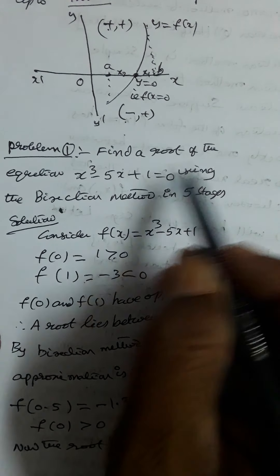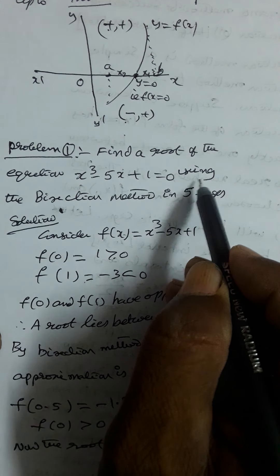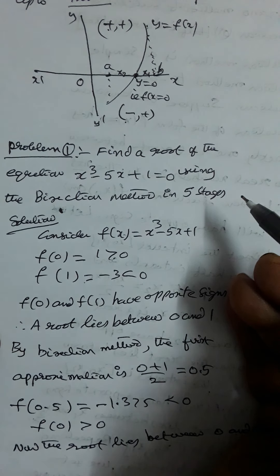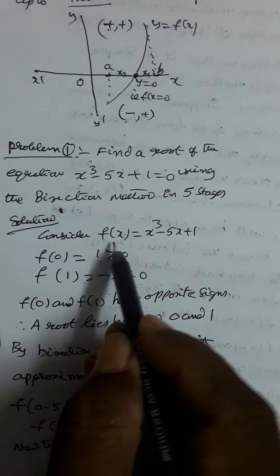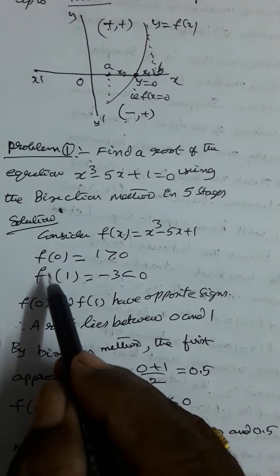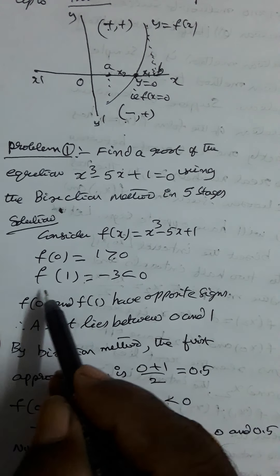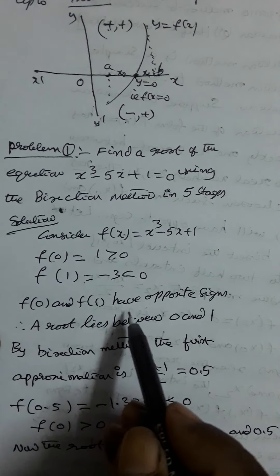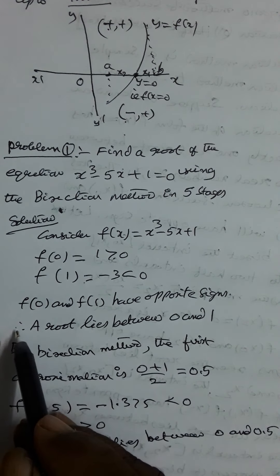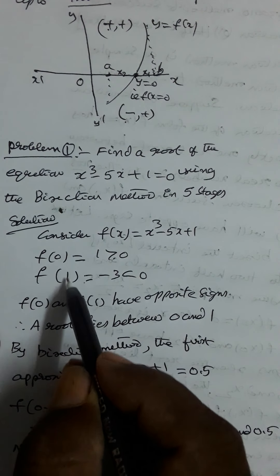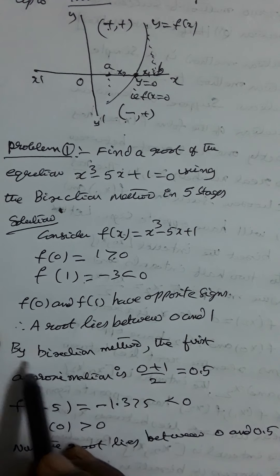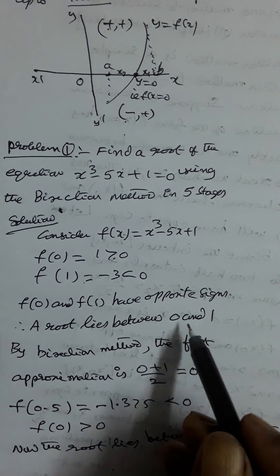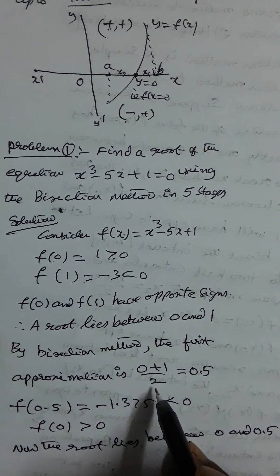Problem 1: Find a root of the equation x³ − 5x + 1 = 0 using the bisection method in 5 stages (5 approximations). Let f(x) = x³ − 5x + 1. f(0) = 1 > 0 (positive); f(1) = −3 < 0 (negative). Since f(0) and f(1) have opposite signs, a root lies between 0 and 1. By bisection, the first approximation is x₁ = (0 + 1)/2 = 0.5. f(0.5) = −1.375 < 0; f(0) > 0, so the root lies between 0 and 0.5.